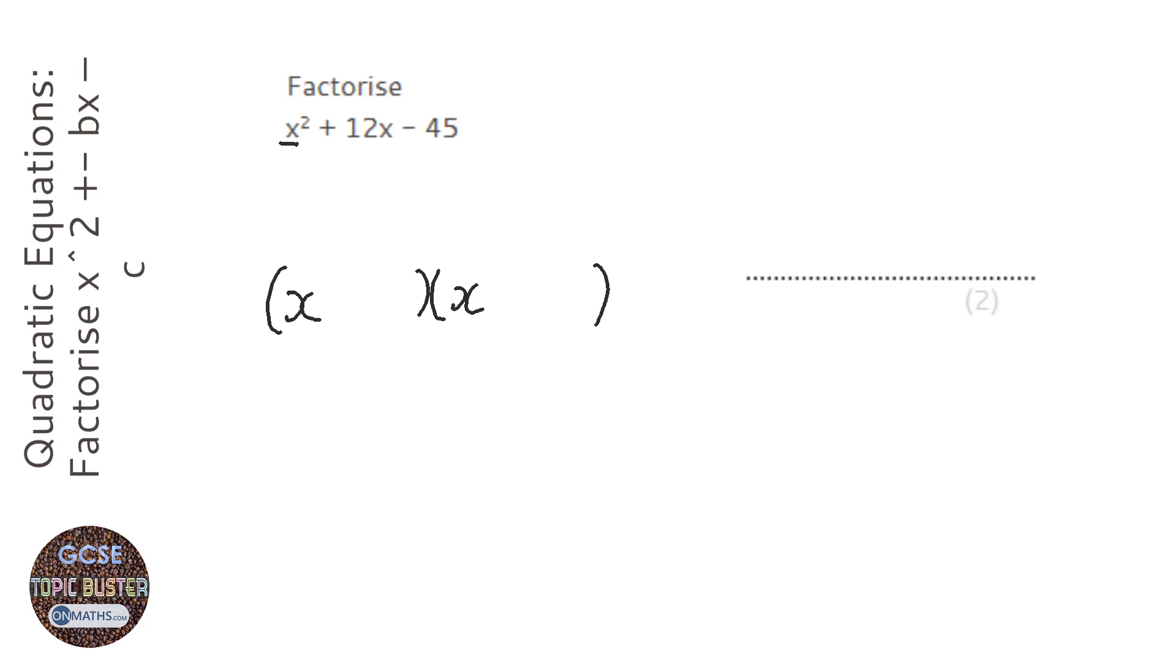Now to do this question we need to think of two numbers that add together to make the 12 there, and times together to make the minus 45 there. So to do this, to find what those two numbers are, I'm going to find the factors of minus 45.